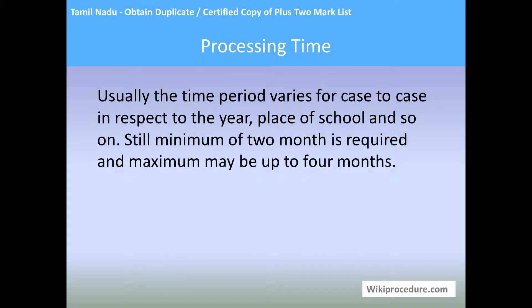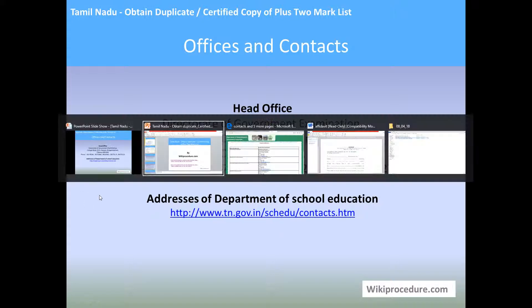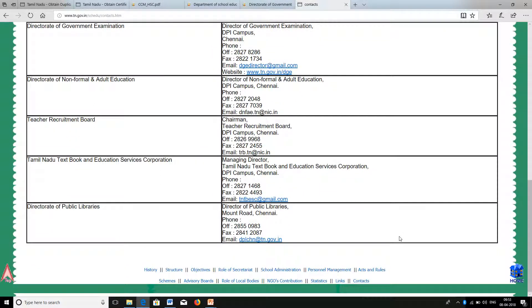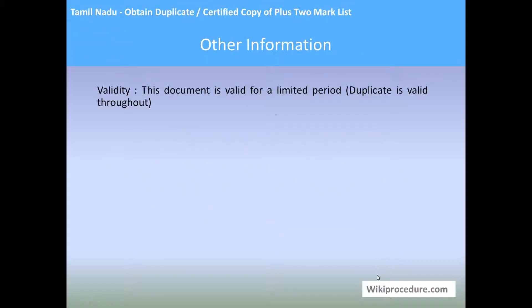Processing time: The time period varies case to case depending on the year, place, and school. Still, a minimum of two months and a maximum of four months is required. Officers and contacts: The head office is the Directorate of Government Examination, College Road, DPI Campus, Nungambakkam. Phone numbers and addresses for a few offices are listed on our wikiprocedure.com.